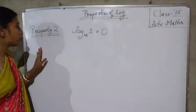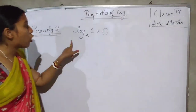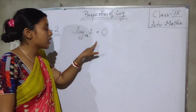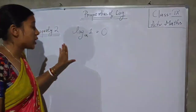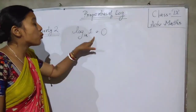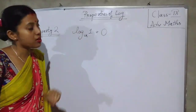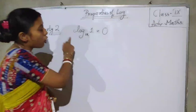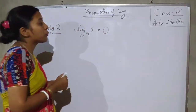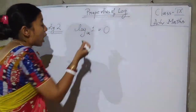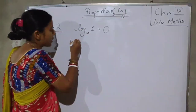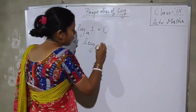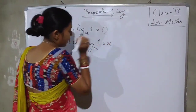Now property number 2: log 1 base A is equal to 0. Log 1 at any base will be equal to 0. To prove this, let us take log 1 base A equal to x.